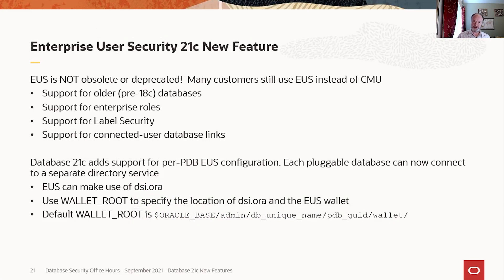Prior to Centrally Managed Users, we had Enterprise User Security, which allows you to connect the database to an Oracle directory like Oracle Internet Directory. Contrary to what you may have heard, Enterprise User Security is not going away — it's not obsolete, not even deprecated. In fact, we continue to develop and maintain the feature. New in 21c is support for per-PDB Enterprise User Security configuration, so each pluggable database could connect to a separate directory. Also new, Enterprise User Security can make use of the dsi.ora, and you can specify the location of the dsi.ora and the EUS wallet with the wallet_root parameter.